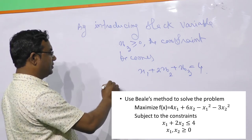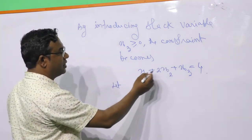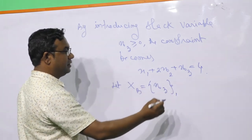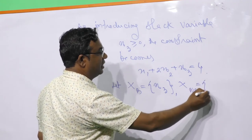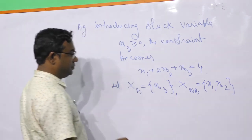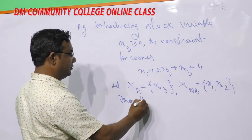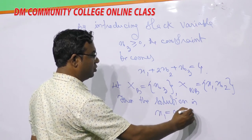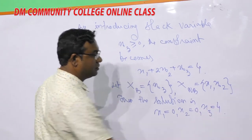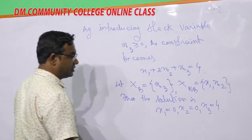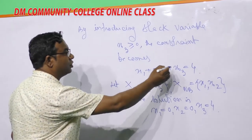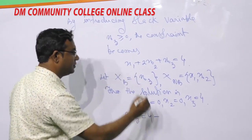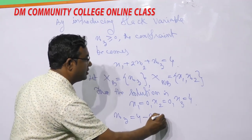Let us take x3 as the basic variable, and x1, x2 as non-basic variables. The initial solution is x1 = 0, x2 = 0, x3 = 4. Now, express the basic variable in terms of non-basic variables. From this equation, we can write x3 = 4 − x1 − 2x2.